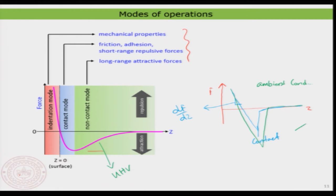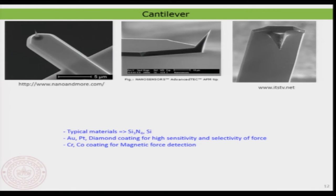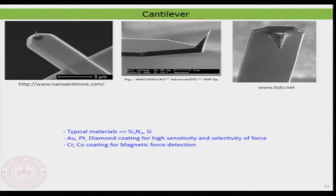It is not an issue — the two types of force curves have different applicability and can be applied in different conditions. Now let me show you the most important thing: the cantilever-tip combination. I have a few scanning electron micrographs — electron microscopy images of different types of cantilevers. You can now commercially buy them. Unlike the STM tip, which you could make easily by cutting a thin wire, here it is not possible because you need a cantilever associated with a tip, so you must process it using different techniques.